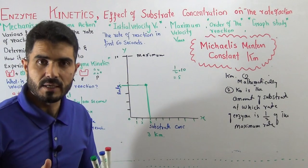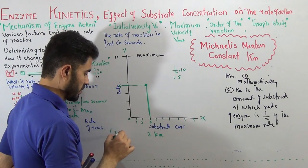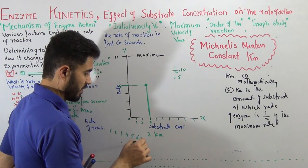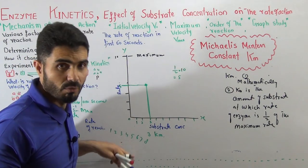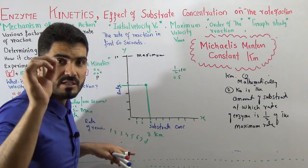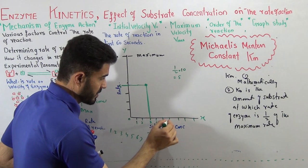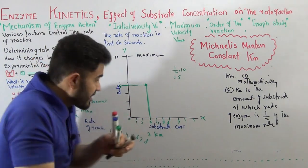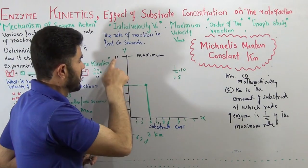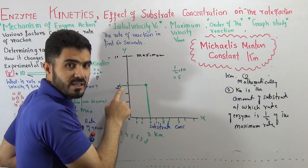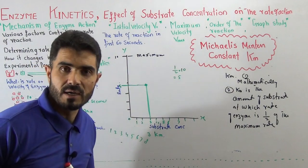Km is actually the substrate concentration. Which substrate concentration will be called Km? This is very important to know. That substrate concentration at which the speed is half of the maximum. Maximum is 10, so half of 10 is 5. So at 5, the substrate concentration will be called Km.